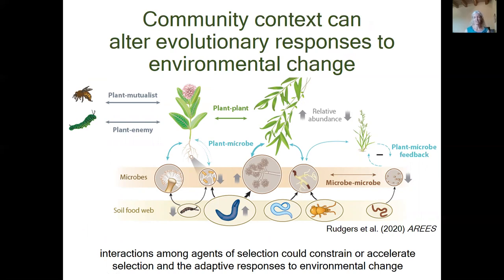Theory predicts that the community context will alter how species evolve in response to environmental change. This is why long-term field experiments are so essential to advancing understanding. In diverse ecological communities, interactions among agents of selection may constrain or accelerate selection and the adaptive responses to new environmental challenges. If we picked out just one species in this network of species interactions, we'd have to consider not only its direct response to an environmental change, but also shifts in natural selection caused indirectly through changes in the interactions that species is involved in. Therefore, to make accurate predictions on evolutionary change for our ecological future, we need studies that capture the complex evolutionary responses to environmental change in realistic field settings.